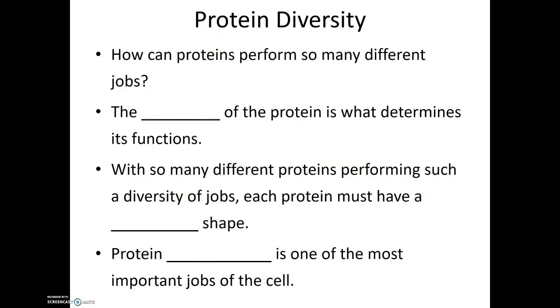You may wonder, how can proteins perform so many different jobs? Well, it is the shape of the protein that determines its functions. This is something we'll see time and time again in biology. The shape of a molecule or the shape of a structure determines its function. So with so many different jobs that proteins need to do, they need to come in a variety of different shapes. Each protein must have a unique shape, a shape that allows it to perform its job. And so making these proteins, making proteins that have the proper shape, we call this process protein synthesis. Protein synthesis is one of the most important jobs of a cell.